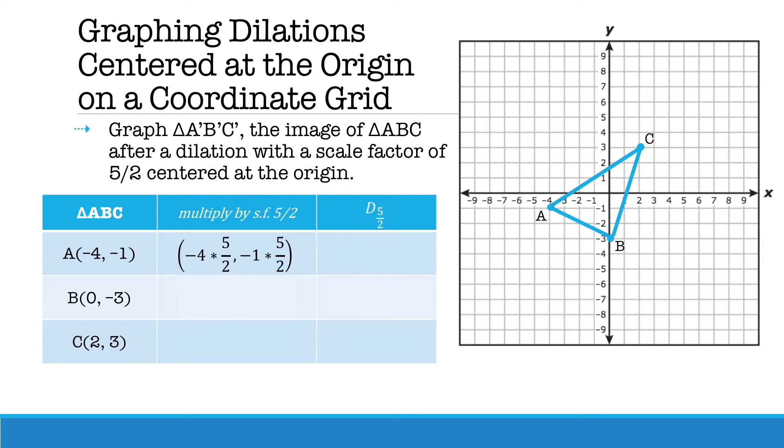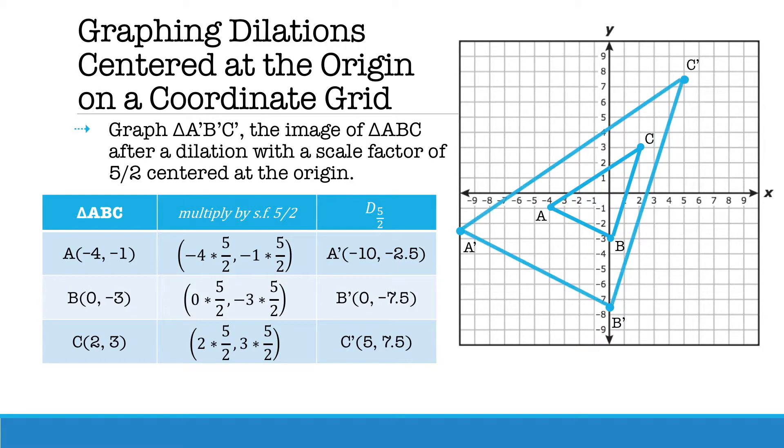A is (-4, -1). We multiply each point by 5 halves to get A' is (-10, -2.5). We do the same thing for B to get B' is (0, -7.5) and then C would change to C', which is (5, 7.5). And then you just connect each vertex. This is how you would graph a dilation centered at the origin.